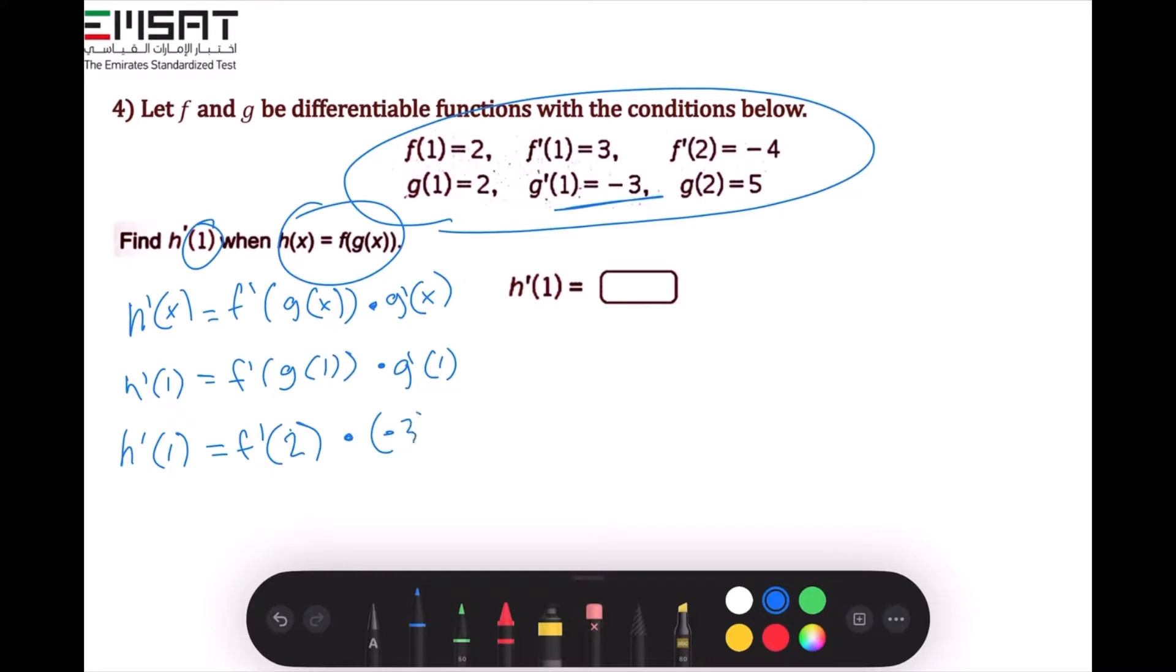So this is going to be negative 3. And then it's also given that f'(2), as it's written here, is negative 4. So we replace that. So we write this again.